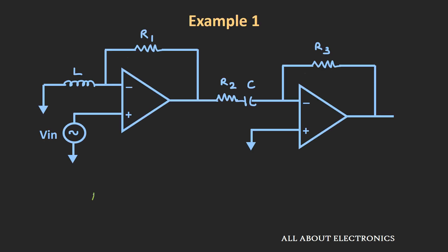The overall gain will be the product of A1 and A2. That is equal to (1 minus j) multiplied by minus 1 divided by (1 minus j), and that is equal to minus 1. So the overall gain of the circuit will be equal to minus 1.